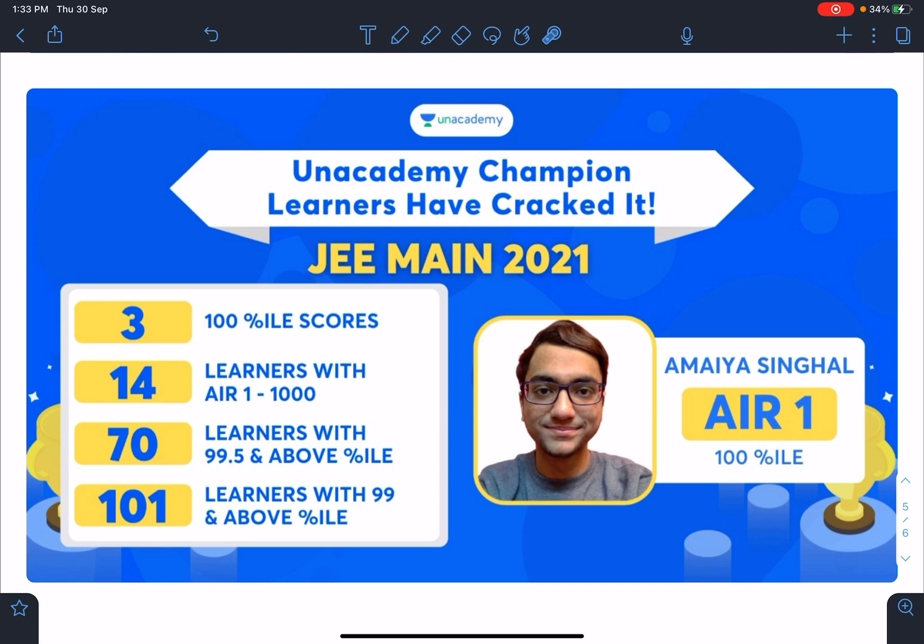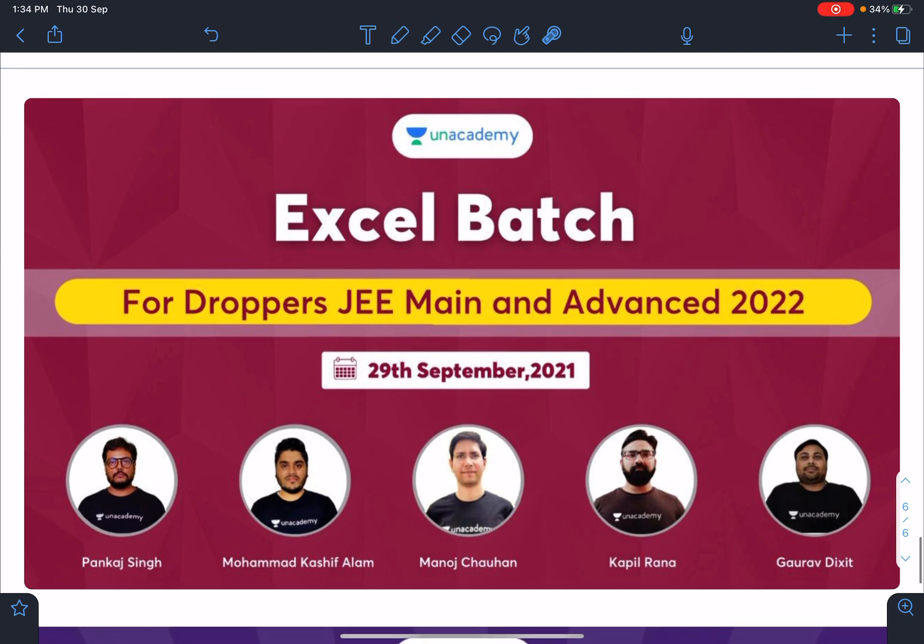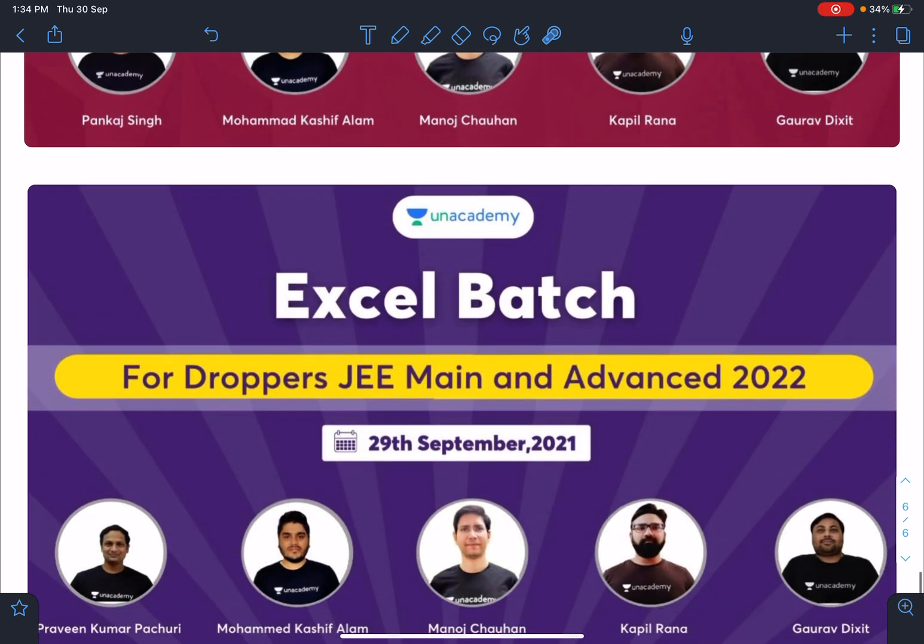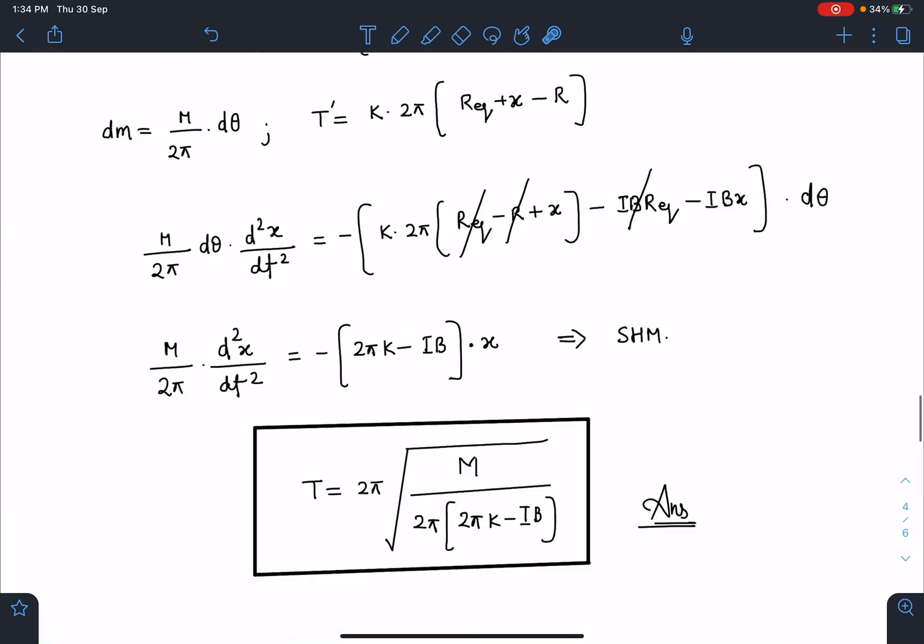And these are the results of Unacademy. There are many more ranks. This is the information about droppers batch, it is starting from 29th of September. And this is another dropper batch, also starting from 29th of September, for JEE Mains and Advanced 2022.